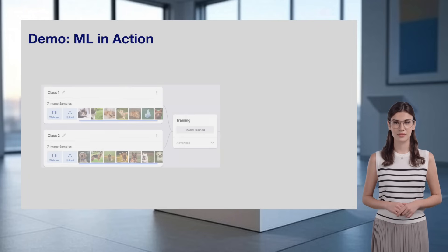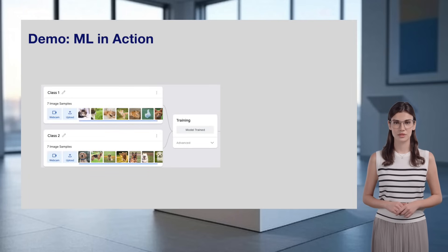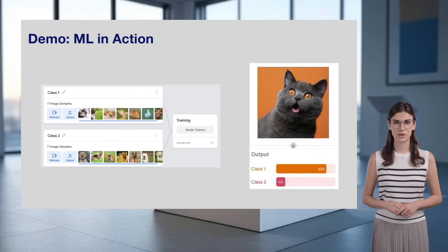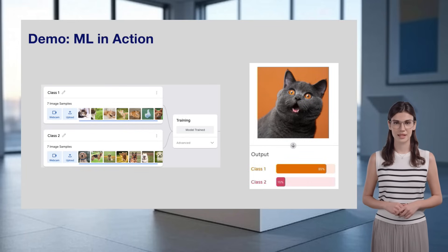See how the ML model learned from the data and classified a new image? That's machine learning in action — learning patterns from data to make decisions. Back to you, Anastasia.